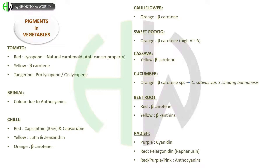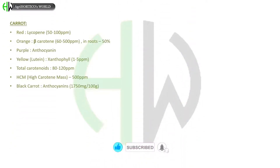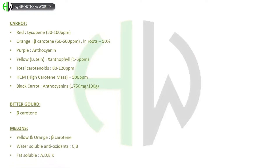In beetroot, red color is also due to cyanidin, and red color due to pelargonidin — that is raffinacin. Red, purple or pink color is due to anthocyanins. In carrot, red color is due to lycopene at about 50 to 100 ppm. Orange color is due to beta-carotene, at 60 to 500 ppm and in roots up to 50 percent. Purple color is due to anthocyanin. Yellow or lute color is due to xanthophyll. Total carotenoids range from 80 to 120 ppm, and HCM — high carotene mass — is about 500 ppm. In black carrot, color is due to anthocyanins.